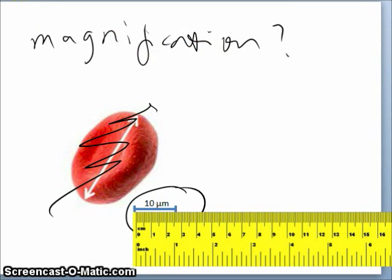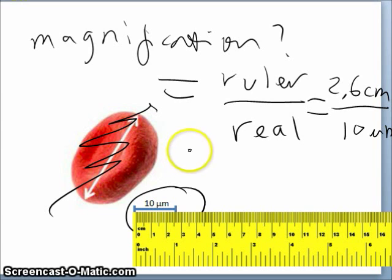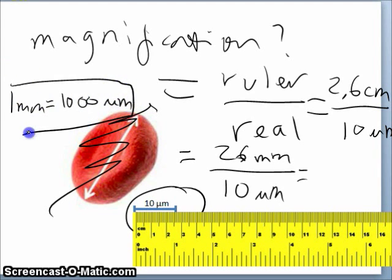So magnification is equal to the ruler size divided by the real size. So that would equal 2.6 cm divided by 10 micrometer. So that will equal to 2.6 cm is 26 mm divided by 10 micrometer. And then 26 mm, just commit to memory that 1 mm is equal 1,000 micrometer. Just remember that ok.